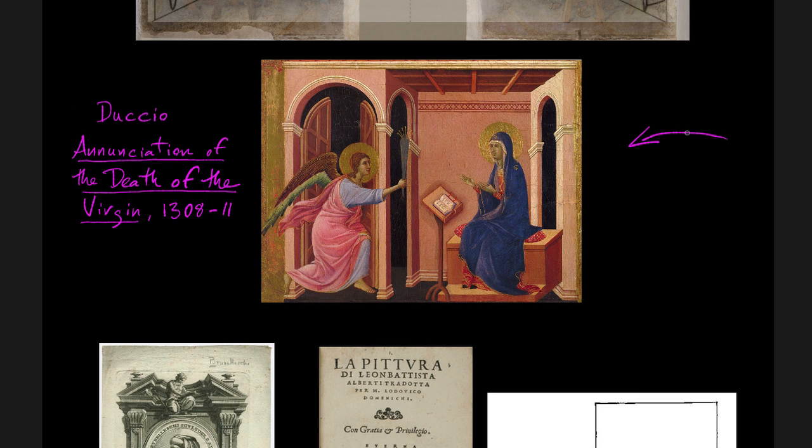But before we leave the Duccio let's spend just a moment being kind of unfair and finding what's wrong. The beams of the ceiling don't agree spatially with the seat that the Virgin Mary is on or with this little stand for the Bible or with the lines that are constructed by the top of the capitals of these pilasters. None of this is really making sense. It's not a rational space and there's this increasing interest in the 1400s in rationalism. That's the period that we really call the Renaissance.